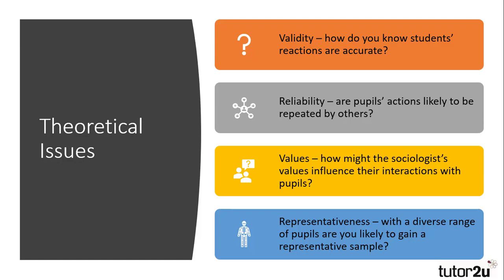Finally, theoretical issues. When researching pupils, how valid is the information provided going to be? For example, if a pupil was observed in a classroom, would their behaviour change? In a group interview, how might pupils react in the presence of their peers? Would the information be influenced in any way, particularly when examining issues such as bullying or anti-school behaviours? Reliability is another issue — how likely is the researcher to be able to gather similar information from another group of students? Student experiences may be unique and therefore repeating the research from one school to another may not yield similar results. Another issue to consider is sociologists' values. For example, how might a feminist sociologist view interactions between male and female pupils if investigating harassment of girls in schools? How might Marxists be influenced by studying social class differences in attention paid to working class and middle class pupils? And finally, representativeness — with the diversity of pupils and the reluctance of some to cooperate, would research be able to find a representative sample?